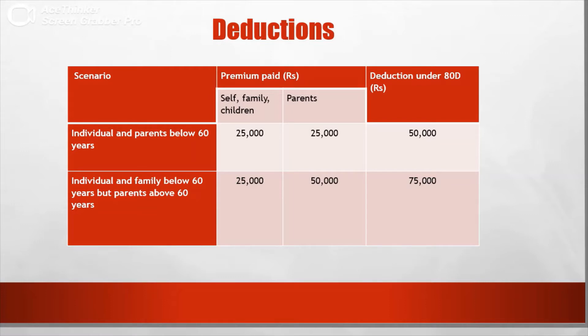If the parents are senior citizens, we can deduct ₹50,000 for them. That means ₹25,000 (for self/spouse/children) plus ₹50,000 (for senior citizen parents).